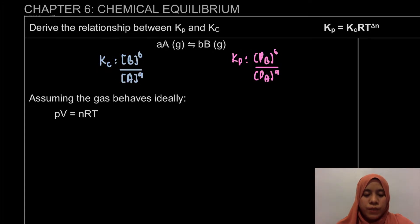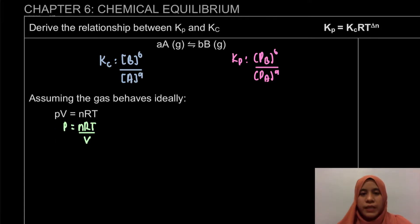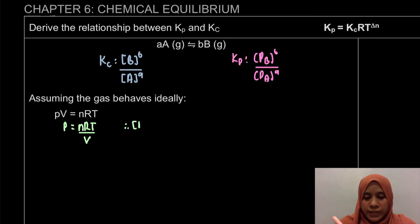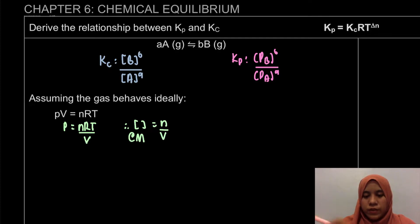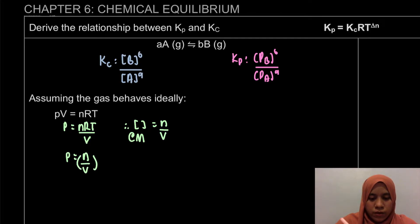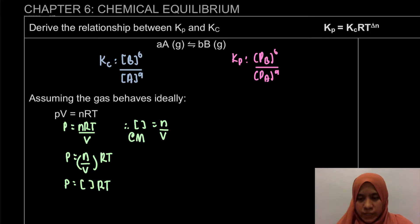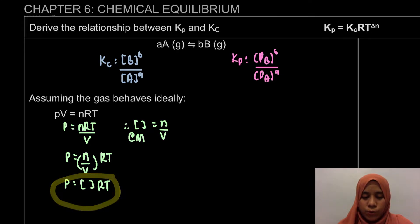From the ideal gas equation, PV = nRT, we want to find P in a way that includes our concentration. Making P the subject, and since concentration (molarity) is n over V, we get P equals (n/V) times RT. So P equals [concentration] times RT. From here, we know that pressure and concentration can be related by P = [X]RT.